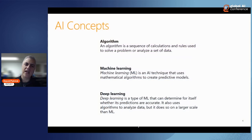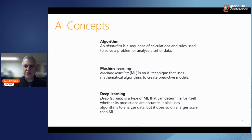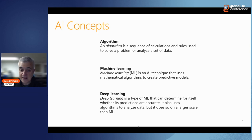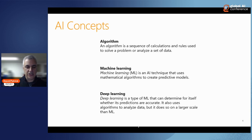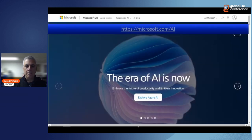There are a few key concepts to be familiar with: algorithms — the sequence of calculations and rules used to solve a problem or analyze data; machine learning — the ability to learn from previous experiences; and deep learning — where the system learns entirely on its own. Microsoft has a great site dedicated to AI covering all of these.